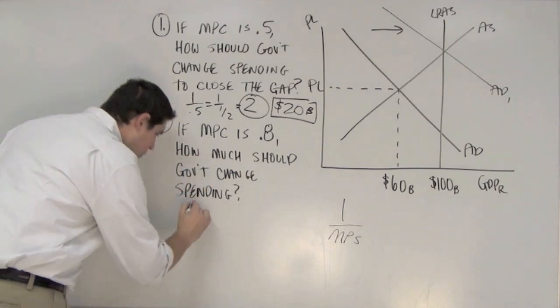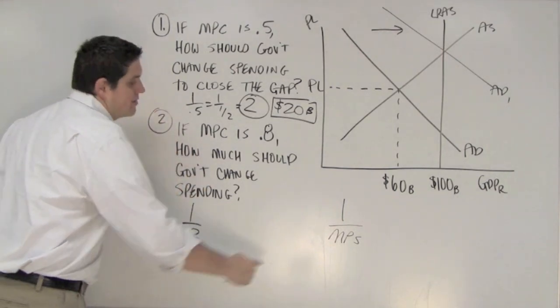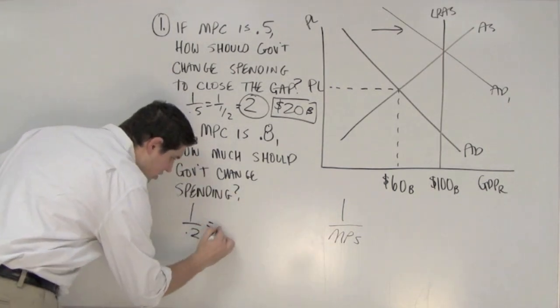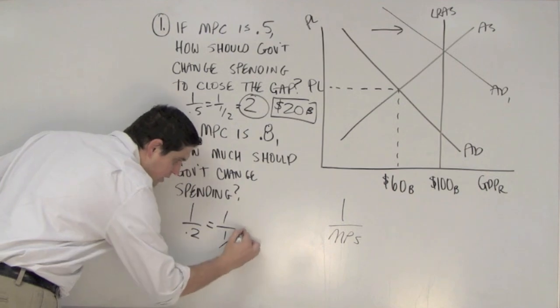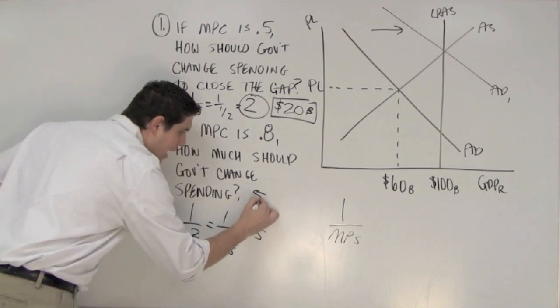Alright, let's try this one. It's 1 over 0.2, because that's the spending multiplier, which is 1 over 1 fifth, which is 5. The multiplier is 5.